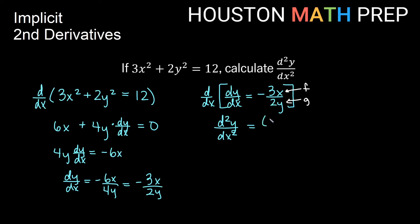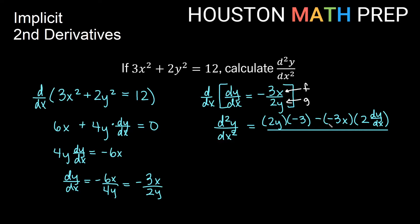Using low d high minus high d low: the low function 2y times the derivative of the high function negative 3x gives negative 3, minus the high function negative 3x times the derivative of the low function. The derivative of 2y gives us 2 dy/dx from the chain rule. All of that is over g squared, so 2y squared gives us 4y squared on the bottom. So we have negative 6y minus negative 3x times 2 dy/dx, which gives plus 6x times dy/dx. Now dy/dx I'll plug in my first derivative result: negative 3x over 2y.